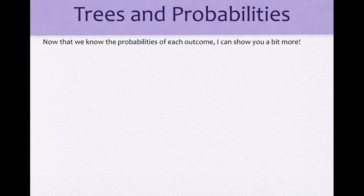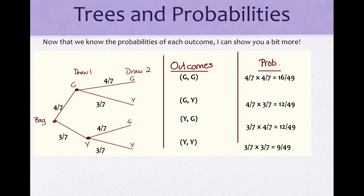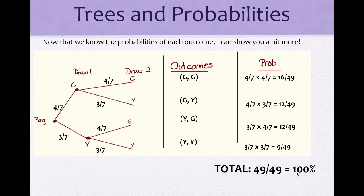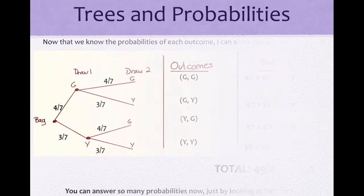Now that we know the probabilities, to check your work you'll notice the total of these probabilities should equal 100%. If it's not equal to 100%, you may have miscalculated or written the wrong probability down. You can now answer many probability questions just by looking at this tree.